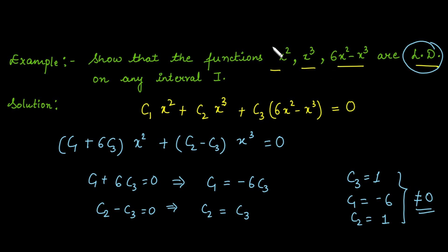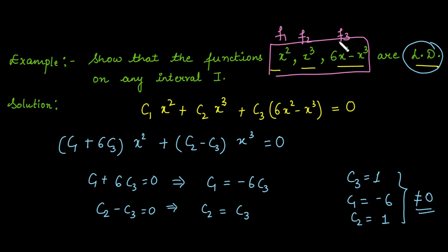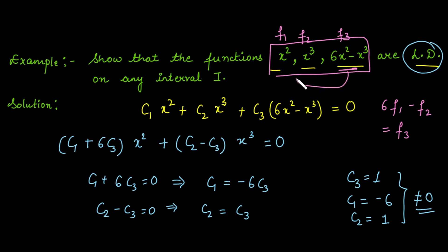We can also observe this directly from the three functions. If we multiply the first function f1 by 6 and subtract f2, we get the third function f3. So f3 can be written in terms of f1 and f2, meaning it depends on them — confirming the set is linearly dependent.